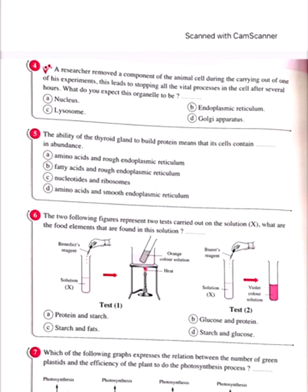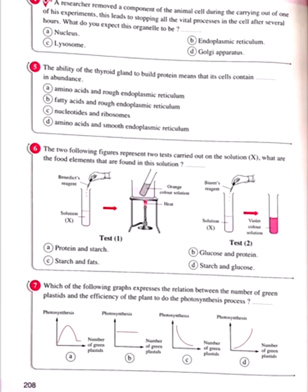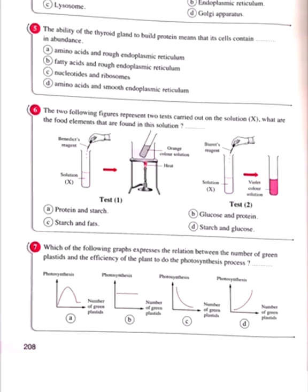Question number 5: The ability of the thyroid gland to build protein means its cells contain in abundance — the answer is amino acids and rough endoplasmic reticulum. Option with fatty acids and rough ER doesn't match — lipids go with smooth ER. Nucleotides and ribosomes — no. Amino acids and smooth ER — protein synthesis uses rough ER, not smooth. Fatty acids and smooth ER — also incorrect. The correct answer is amino acids and rough endoplasmic reticulum.